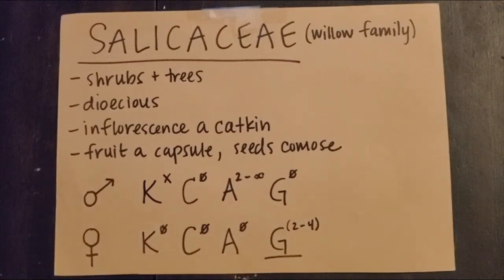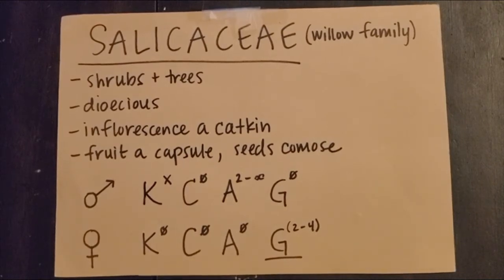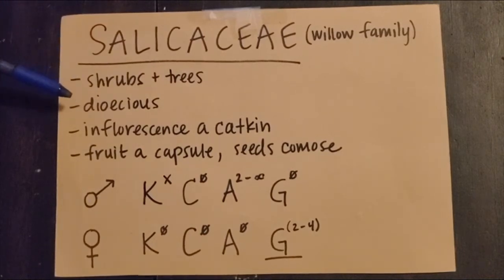We're just going to do a quick little review of the Salicaceae, or the willow family. Members of the Salicaceae are shrubs or trees. They're dioecious, meaning that there are separate female plants and separate male plants.